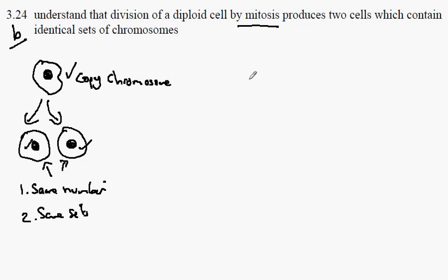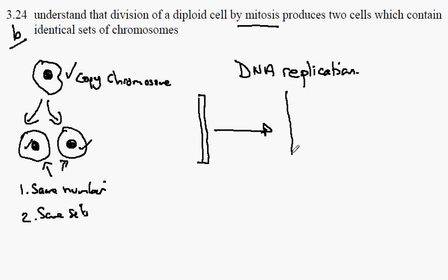Copying the chromosomes is a process called DNA replication. In this process, each chromosome undergoes a copying process to form an identical copy of itself